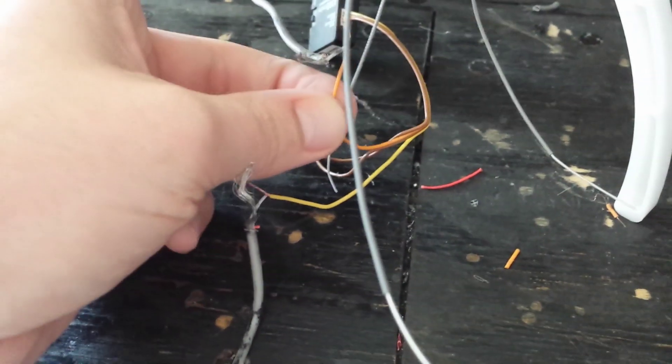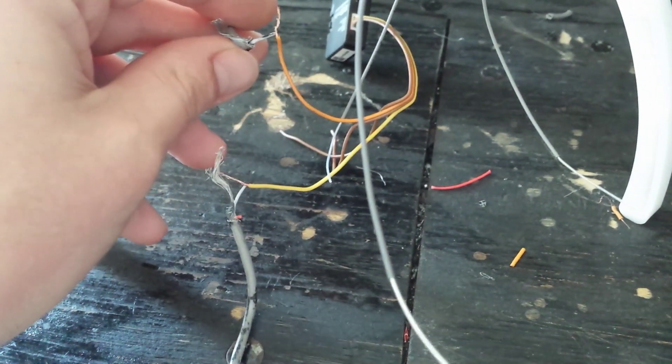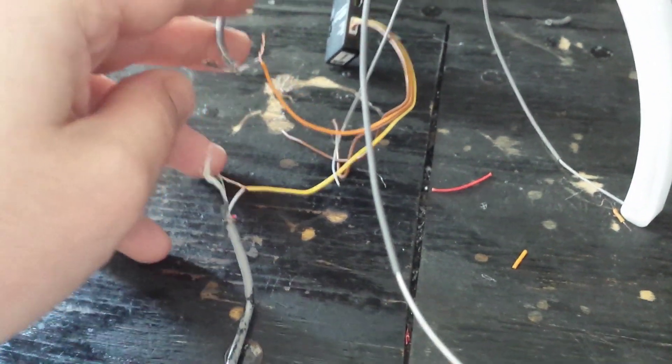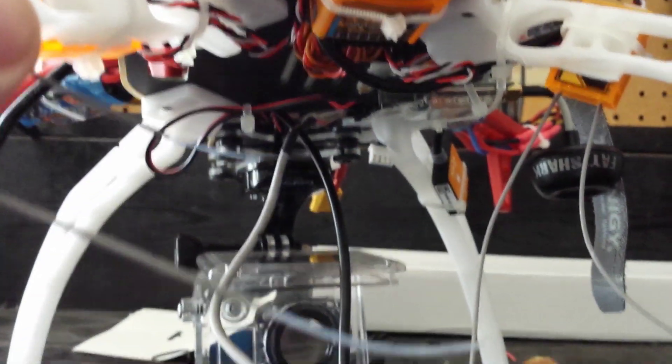And then of course video out is the orange wire from the IOSD, and that goes to the same video wire that goes to your video transmitter. I use the Fat Shark.